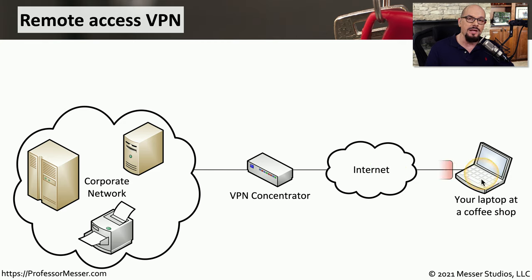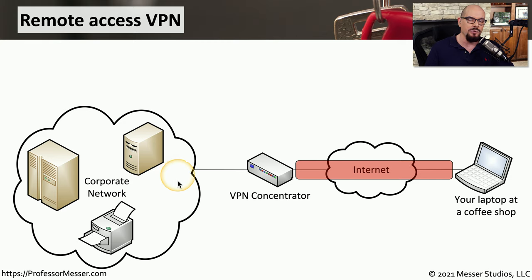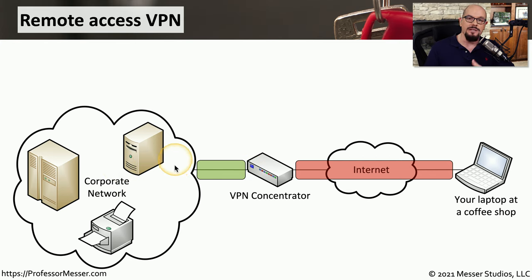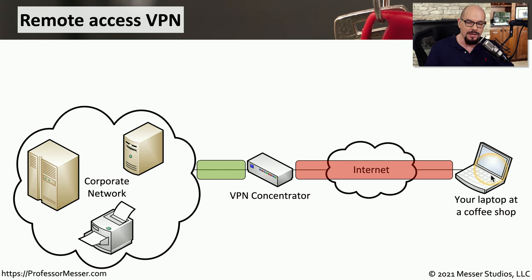So instead, you start your VPN software and create an encrypted tunnel to the VPN concentrator that is just in front of your corporate network. The VPN concentrator decrypts that information and sends everything in the clear into the corporate network. Information from the corporate network will be encrypted by the VPN concentrator, sent across the internet, and the VPN client on your laptop will decrypt that data and show you the information as if you were sitting locally in the corporate network.